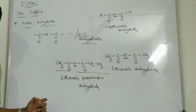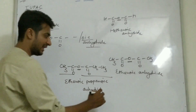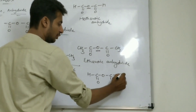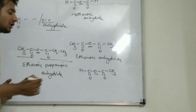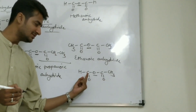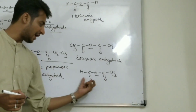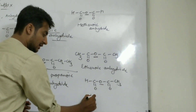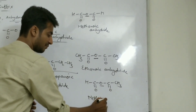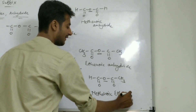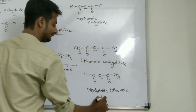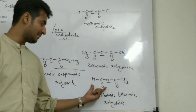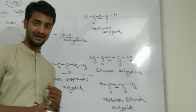Whenever different numbers of carbons are on each side, we do the nomenclature in increasing order. Last example: H — C double O — O — C double O — CH3. This is the oxygen. On the left side how many carbons? One — so methanoic. Right hand side: two — so ethanoic. We go in increasing order, so the name of this compound will be methanoic ethanoic anhydride.